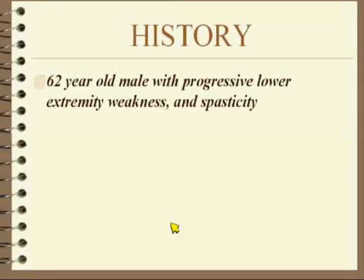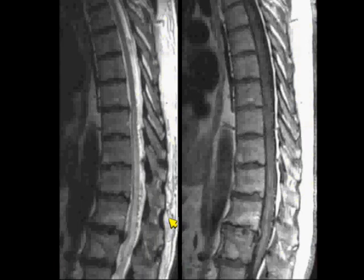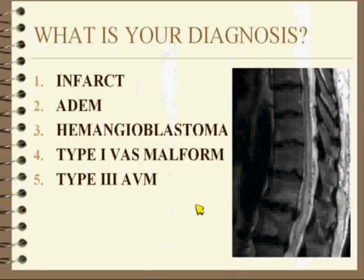Next one: 62-year-old with progressive lower extremity weakness and spasticity. T2 on the left, T1 with contrast on the right. So what do you think this is? Is this a cord infarct? Is this ADEM? Is it a hemangioblastoma? Is it a type 1 vascular malformation? Or is it a type 3 AVM?